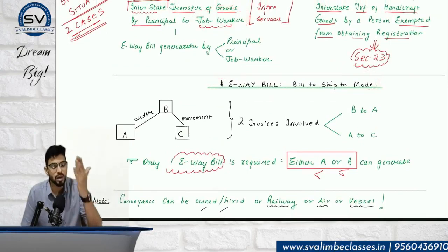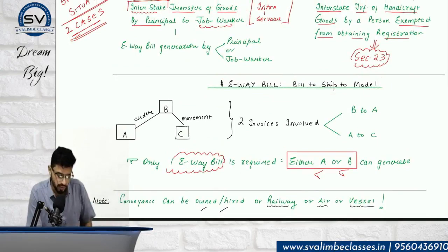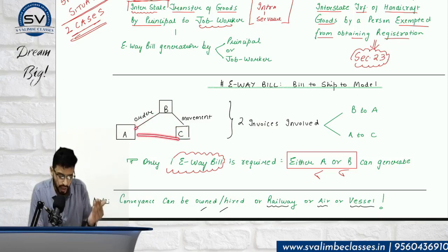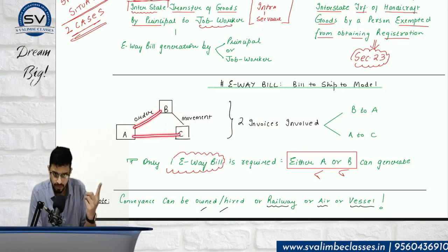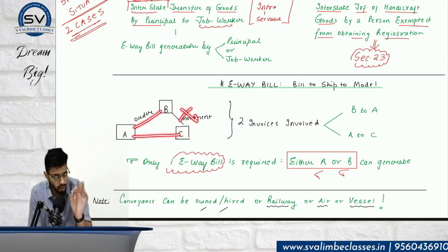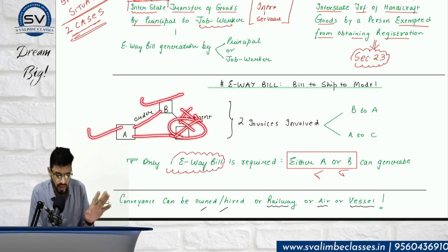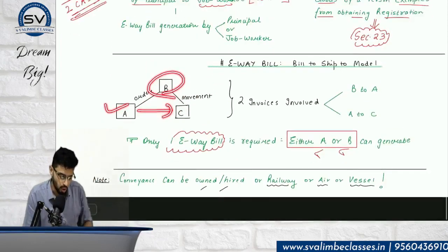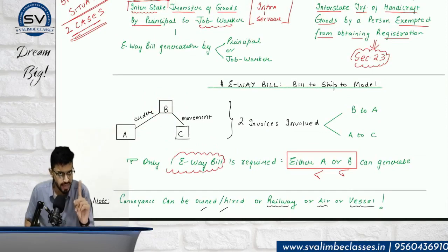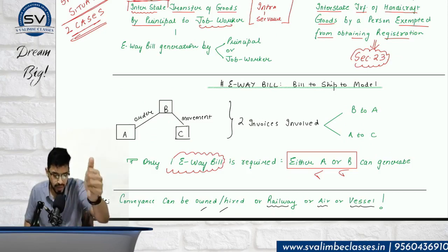In the case of bill-to-ship-to model: A ordered from B, C ordered from A, so A told B to deliver directly to C. There are two supplies — A to B and A to C — but B and C have no direct relation. Who generates the e-way bill? Either A or B can do it — C being the final customer does not generate it. Importantly, only one e-way bill is required, not two, even though two supplies are involved.